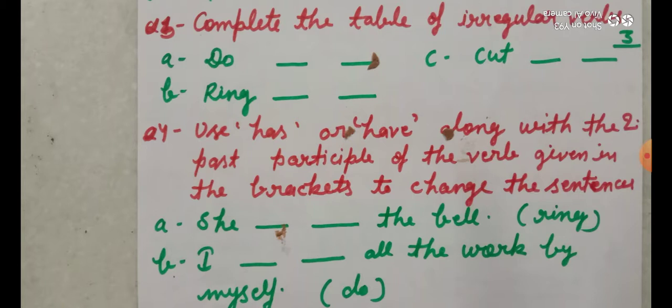In the same way, you will do these two sentences. She dash dash the bell, the verb is ring. And I dash dash all the work by myself, the verb is do.